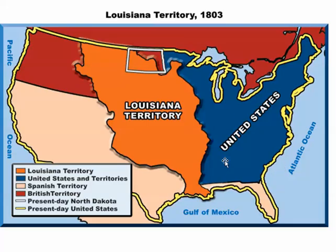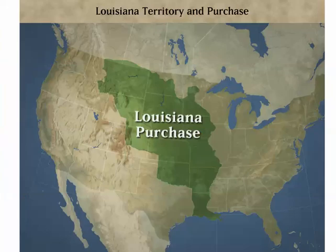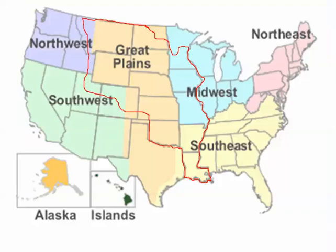If we look at a map of the United States before the Louisiana Purchase — shown in blue — with Spain holding Florida at the time, here's the Louisiana Purchase. It doubled the size of the United States, and so territorial expansion occurred. A large part of the Louisiana Purchase is what we call the Great Plains. Looking at a different map, we can see the southeast, the northeast, the midwest, and the Great Plains running down through the center of the country. A large part of this purchase is the Great Plains area.